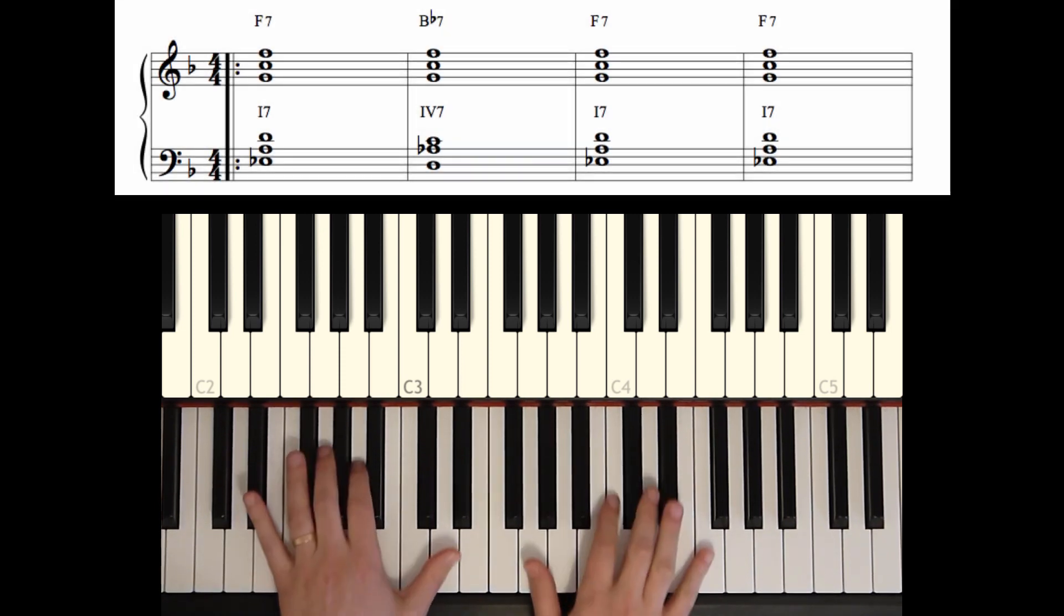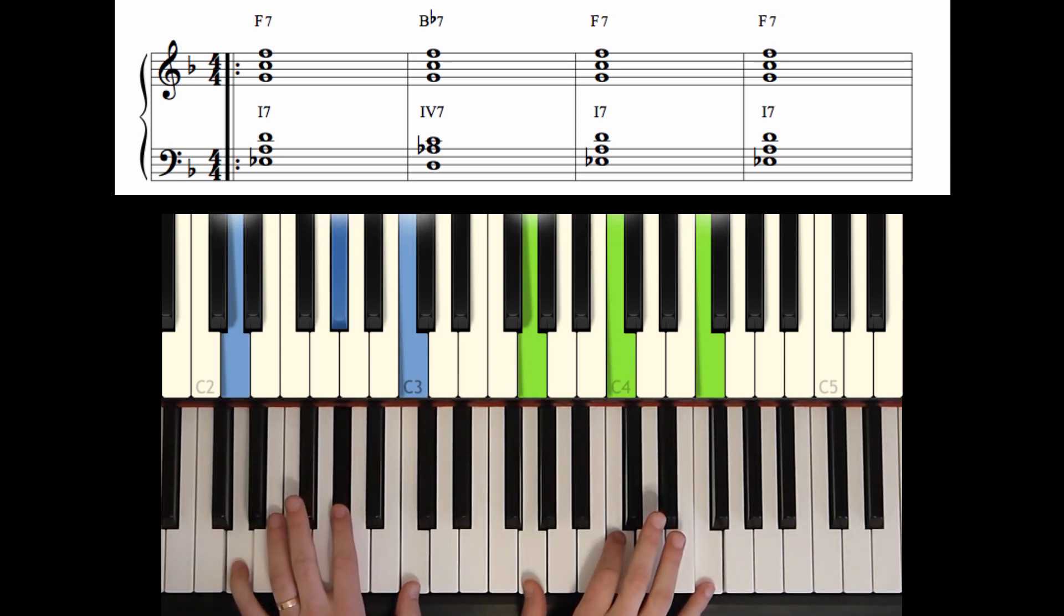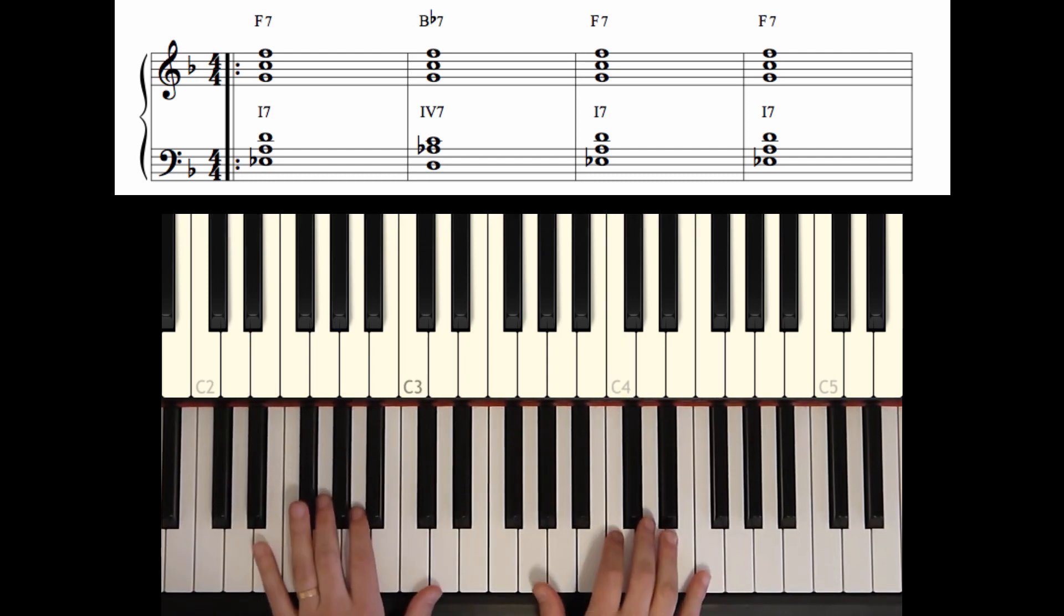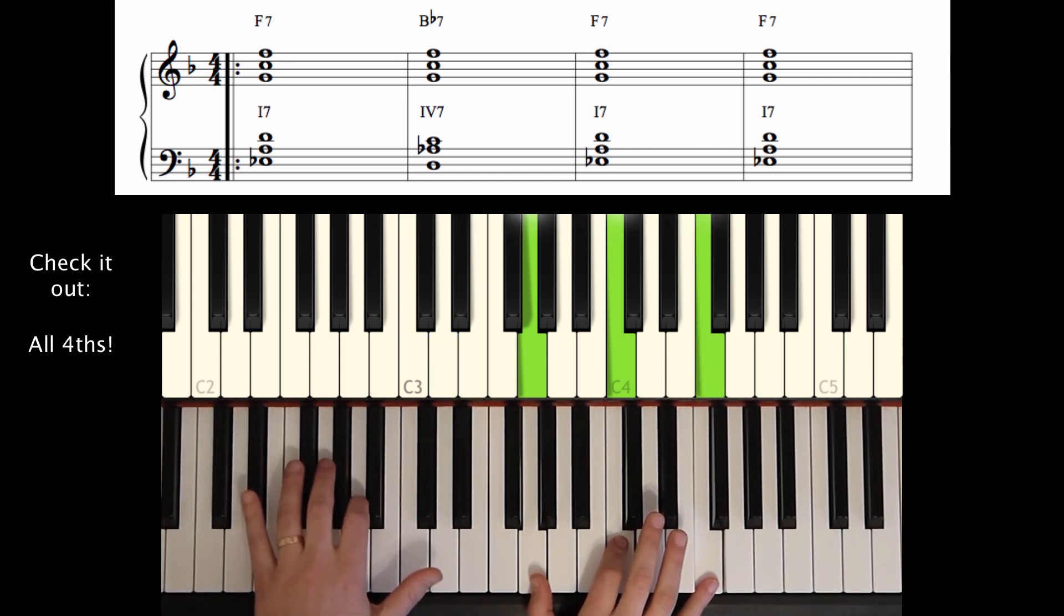So our first four measures have these two chords. Okay, so our first chord we're in the key of F doing an F blues. Our first chord is an F7. And we have E flat, A, D, G, C, and F. Our 7th, 3rd, 13, 9, 5th, and then the root at the top.